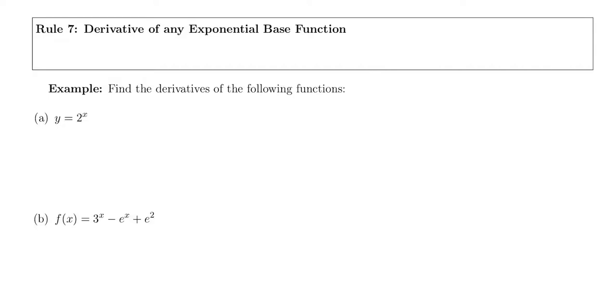Our seventh rule is the derivative of any exponential base function. So not necessarily e to the x, but any other number besides e, which remember is a specific number, it's about 2.7, but we're talking about any number base. So if we have any number a to the x, so maybe 4 to the x instead of e to the x, how would we approach taking this derivative?